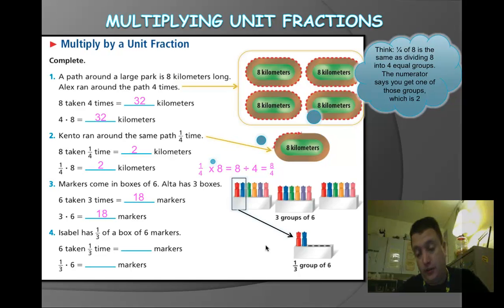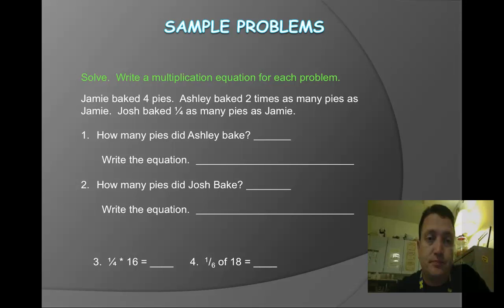Now, Isabel has 1 third of a box of 6 markers. They've kind of shown you that in this illustration. So they took 2 of these markers, right? They took 1 third of the group of 6. They took my 6, and the denominator said I'm going to divide it into 3 equal parts. If I get 1 of those groups, that's 1 third of 6, I'm going to get 2 markers. And this should be review. I mean, we covered this in 4th grade as well.